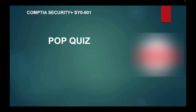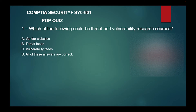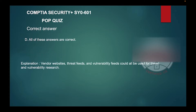Question one: Which of the following could be threat and vulnerability research sources? A) Vendor websites, B) Threat feeds, C) Vulnerability feeds, or D) All of these answers are correct. The correct answer is D — all of these answers are correct. Vendor websites, threat feeds, and vulnerability feeds could all be used for threat and vulnerability research.